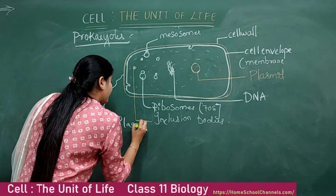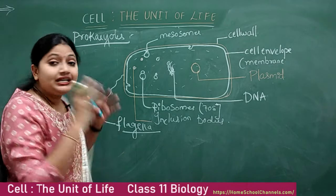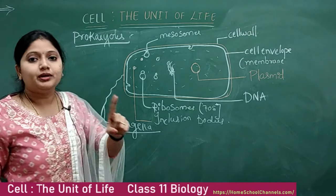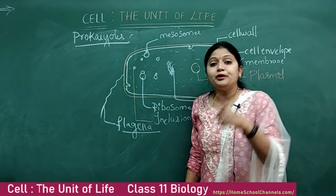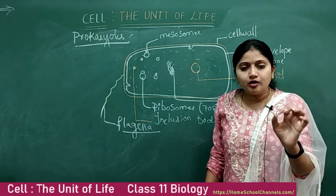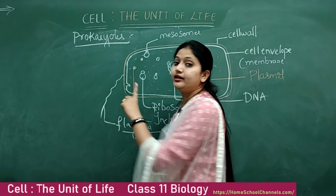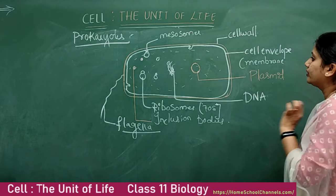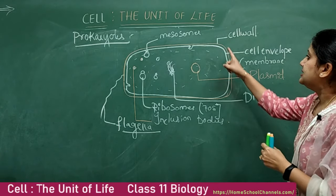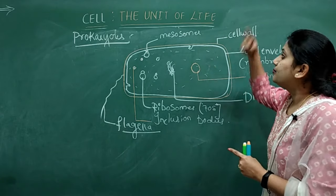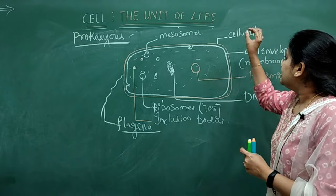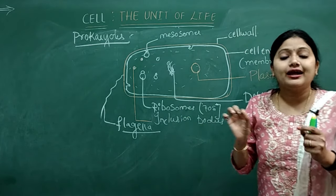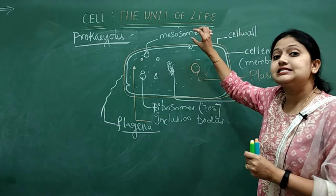The detailed structure of the flagella — its composition and parts — will be covered in the next video. Motility means the movement of an organism. If bacteria are motile, they have an appendage called flagella. Also, above the cell wall, there is one more layer in a few bacteria called the glycocalyx layer, though details will be studied when covering the cell envelope in detail.